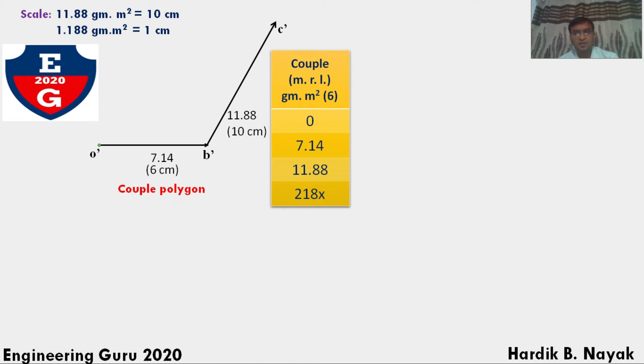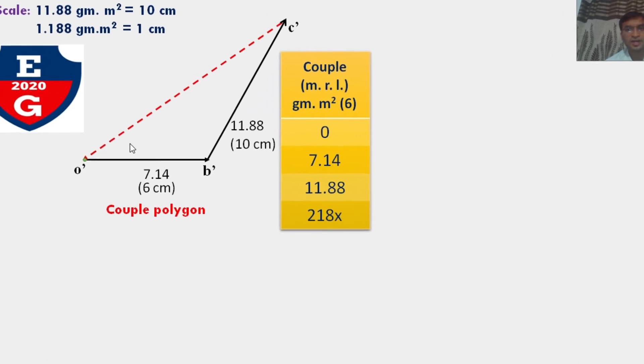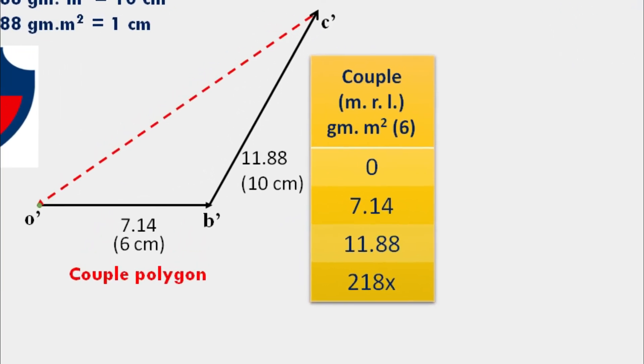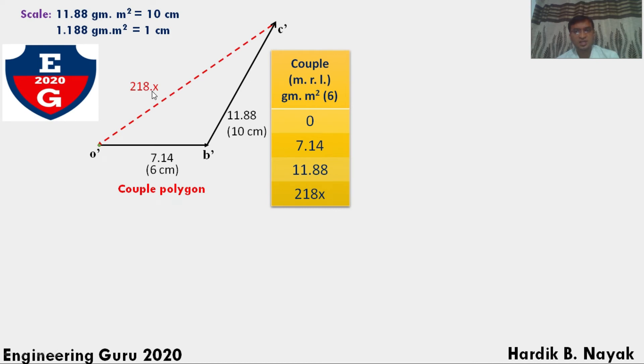Now join simply the point couple line, that is O dash C dash. I measure from the couple polygon diagram. Balance vector 218X equals vector C dash O dash. So measure with the scale, that value will be 13.6 centimeter. Multiply by scale to get the value equal to 16.15 gram meter square. So we get the value of X, that is total distance X equals 74 mm.